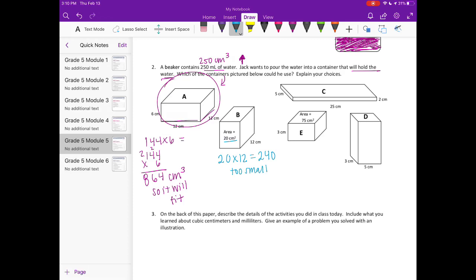Let's look at C. Let's see, 25 times 2 equals 50, and 50 times 5 is 250. So this will fit exactly.